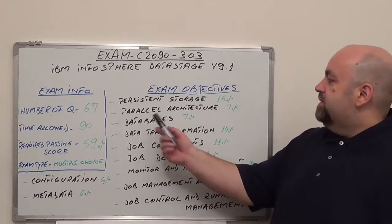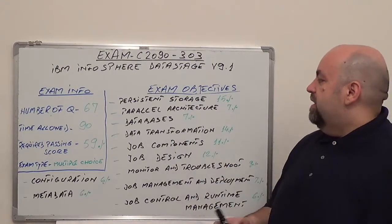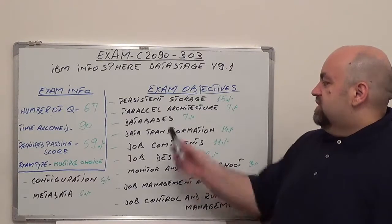Third one is persistent storage, 15% of total questions. Next one is parallel architecture, 7% of total questions.